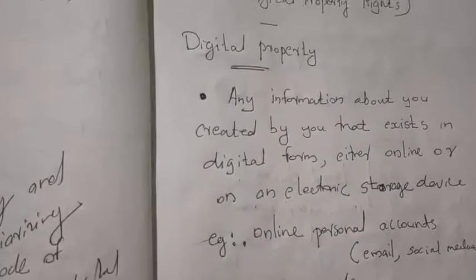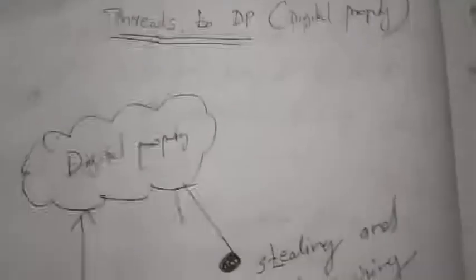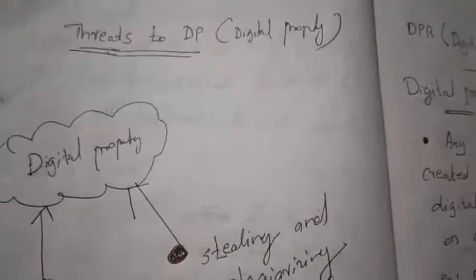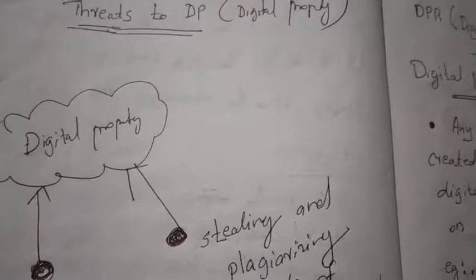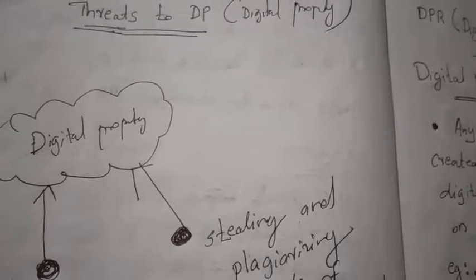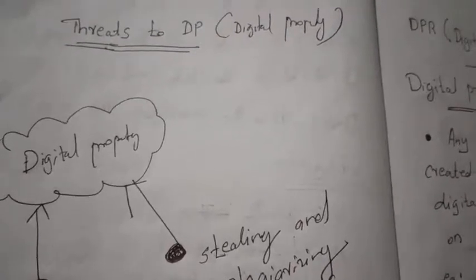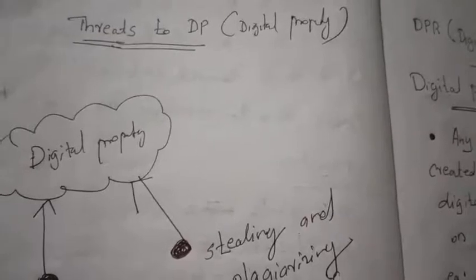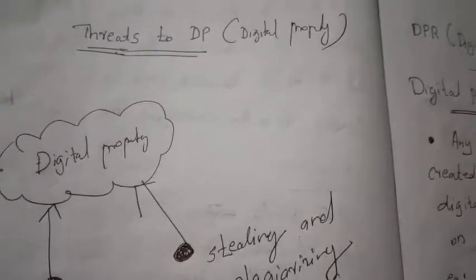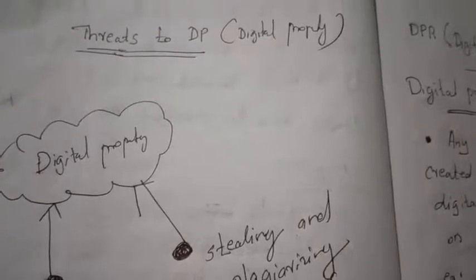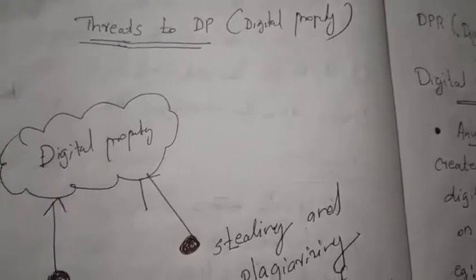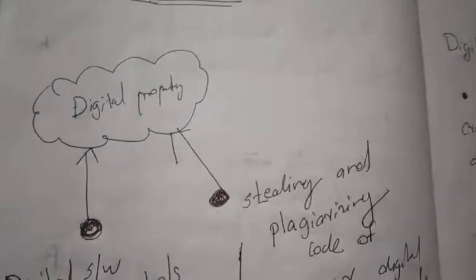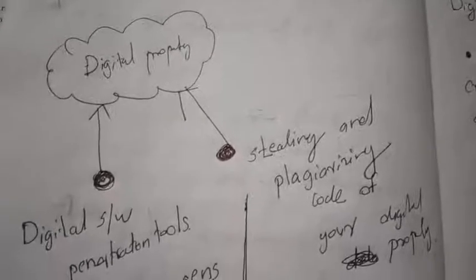Now that we understand the digital property concept, we can move to the threats to digital property. Threats means the different ways your digital property can be taken by others. So what are the different ways your digital property can be threatened?